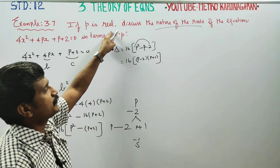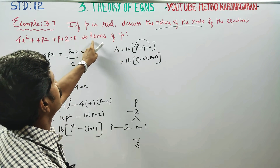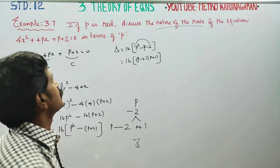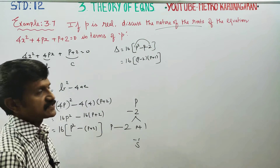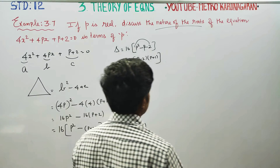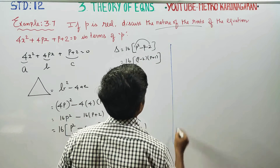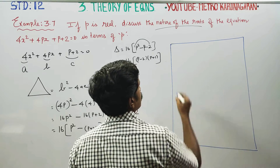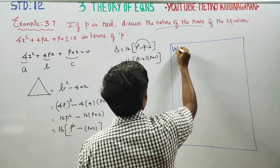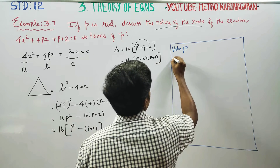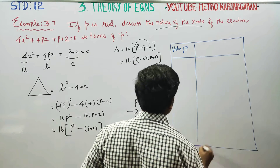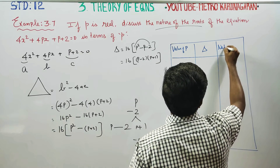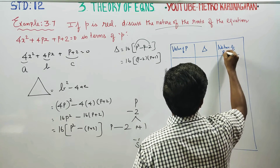If p is real, we discuss the nature of the roots for different values of p. We can set up a table with the value of p, delta in terms of p, and the nature of the roots.